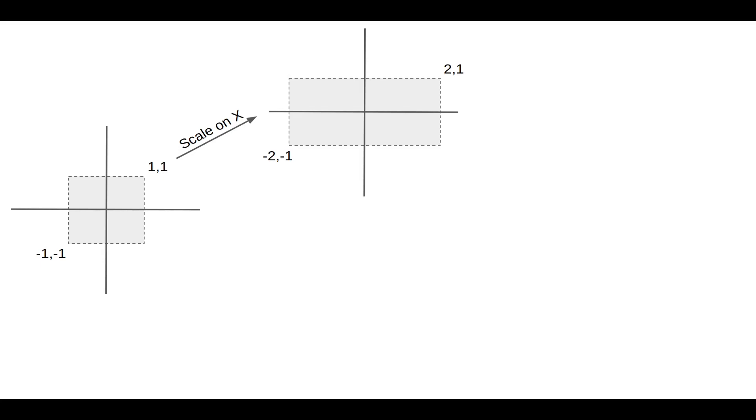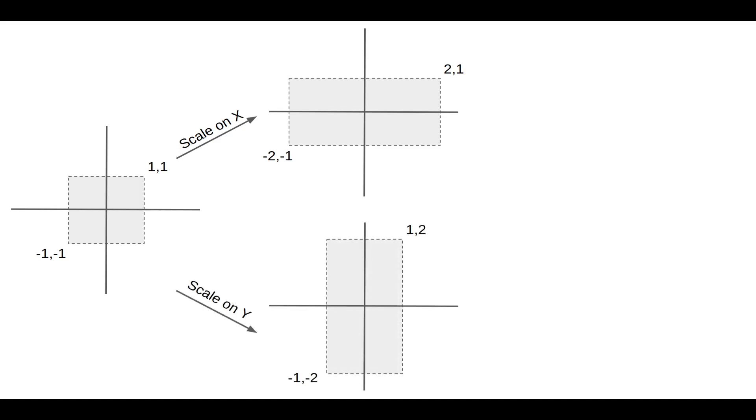Now let's get serious and talk about the math and the code. Since this is a fairly short topic, we're also going to discuss the combination of transformations and the ordering of transformations, so stay tuned. The idea of scaling is to multiply one or more components of the position coordinates by an arbitrary factor — this must be done on all vertices of the mesh so they all scale together. Here we have a square; let's scale its x component by 2, which causes the square to become a rectangle stretched horizontally.